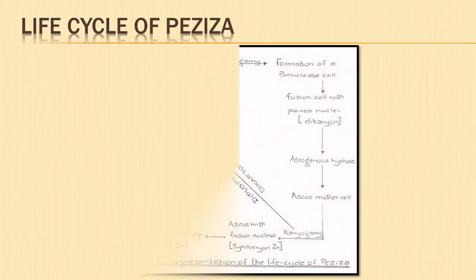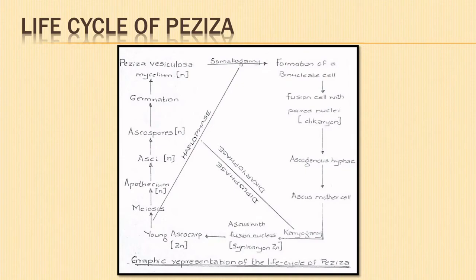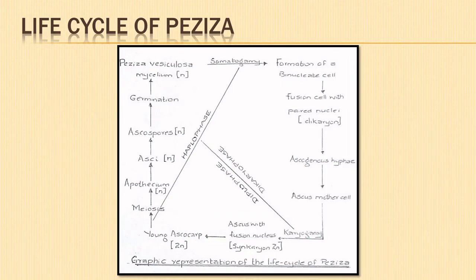The graphic representation of the life cycle of Peziza clearly shows three distinct phases, namely the dikaryophase, the diplophase, and the haplophase. The dikaryophase is represented by the dikaryotic cell, ascogenous hyphae, and the ascus mother cell. This is followed by karyogamy. The young ascus with the synkaryon represents the transitory diplophase. With the successive division of the synkaryon, haploid ascospores are formed, which on germination form the new mycelium. This is the haplophase in the life cycle of Peziza.